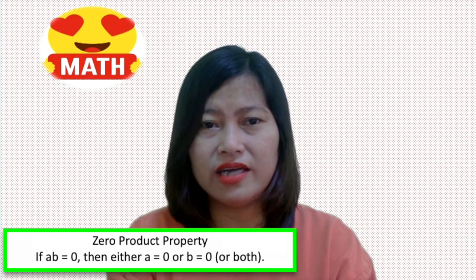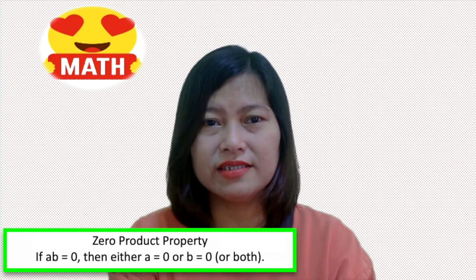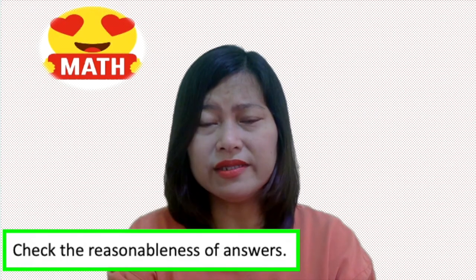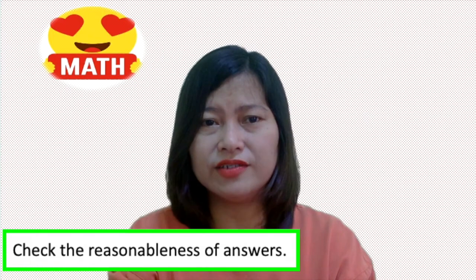either a is zero, or b is zero, or both. And number three, check the reasonableness of answers. This means that you have to discard solutions that do not make sense — for example, time and distance cannot be negative.